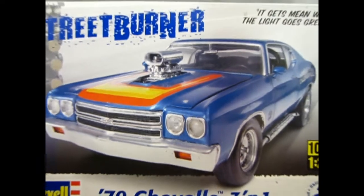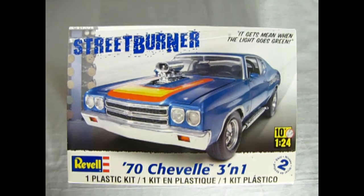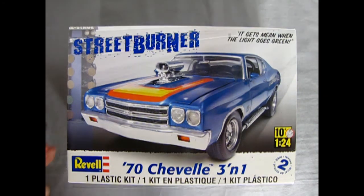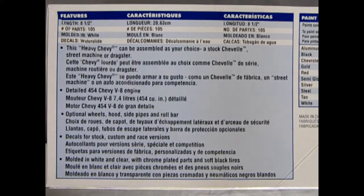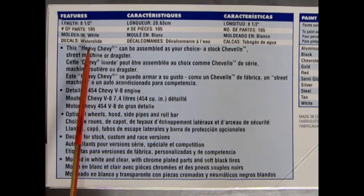It gets mean when the light goes green, our 1970 Chevelle SS 3-in-1 model kit by Revell. This is an age 10 kit, skill level 2, 1/24th scale and really cool. I've built this in the past and in this kit you do get three different building options. It's eight and a half inches long when built. You get 105 parts molded in white and the decals are water slide.